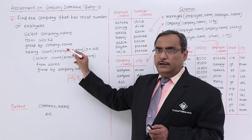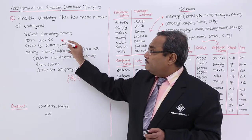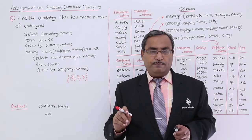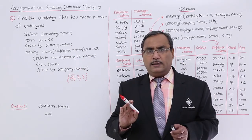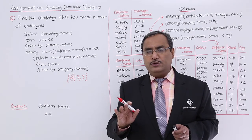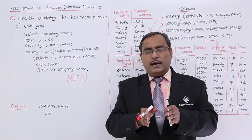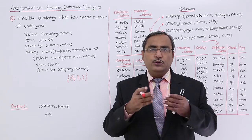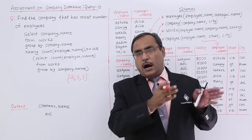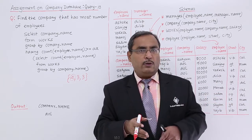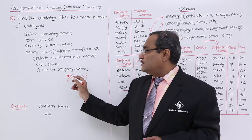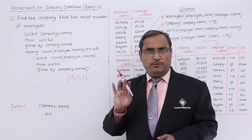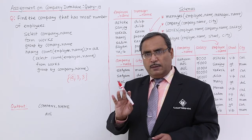Whenever the count of 4 is matched, the respective company name will go to the output. That is how the query gets executed. For a simpler explanation of query execution, always go for the inner query first and check what sets it produces at runtime, then check how the outer query works on that. The inner query produces a set containing 3 values — 4, 3, 3 — because we have 3 companies.